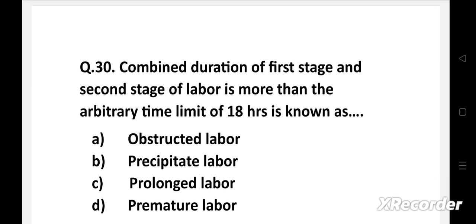Next question: Combined duration of first stage and second stage of labor is more than the arbitrary time limit of 18 hours is known as - Option A: Obstructed labor, B: Precipitate labor, C: Prolonged labor, D: Premature labor.